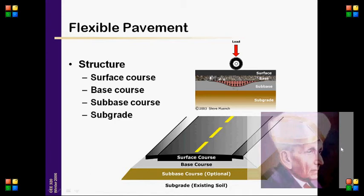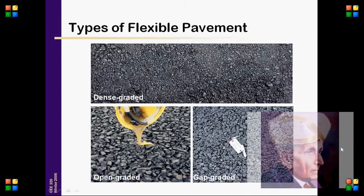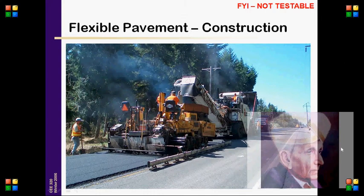Flexible Pavement Structure consists of a Surface Course, Base Course, Sub-Base Course, and Sub-Grade. Types of Flexible Pavement include Dense Graded, Open Graded, and Gap Graded.